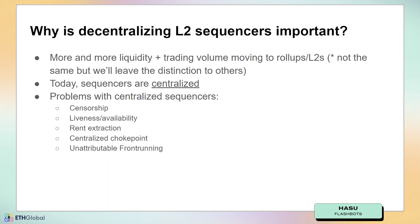So why is decentralizing layer 2 sequencers important? Because as Vitalik was alluding to, rollups are becoming more and more important and more and more volume and liquidity is moving over to these new execution layers. And I don't think we have even started to imagine the end state of how blockchains will scale. As we're seeing with these different rollups, rollup providers have all pivoted to rollups as a service.